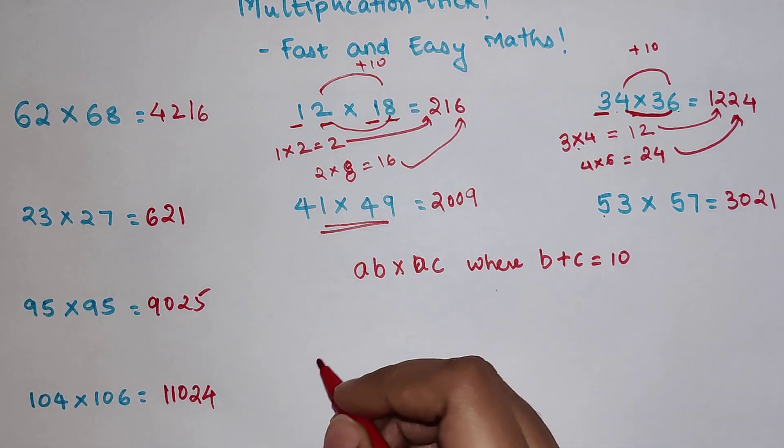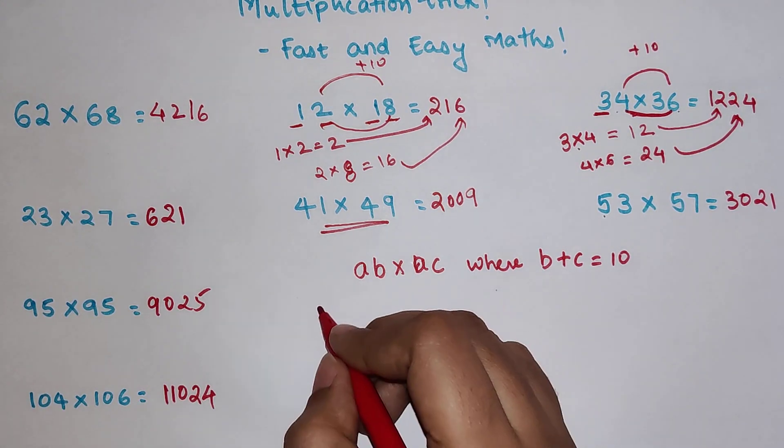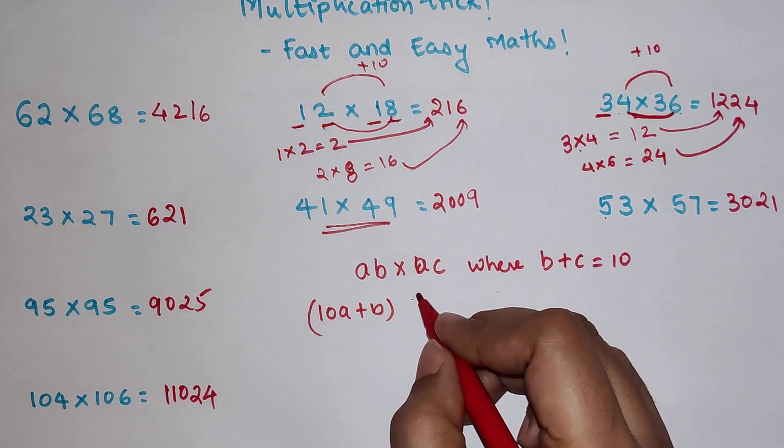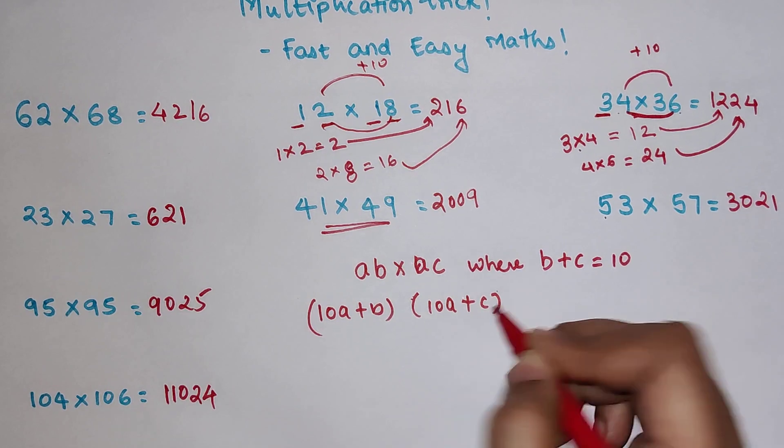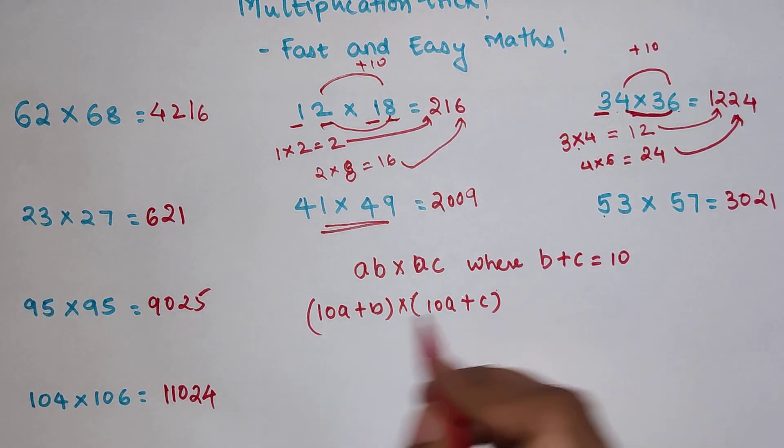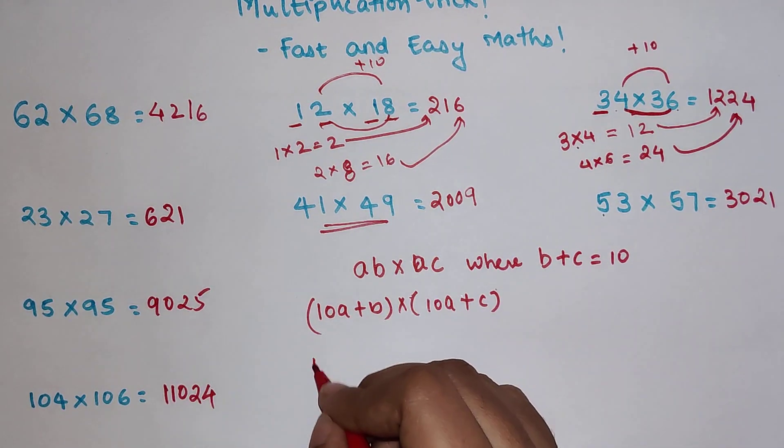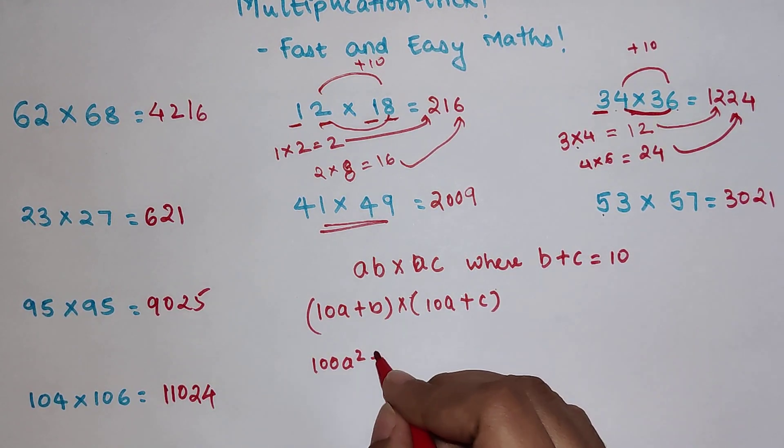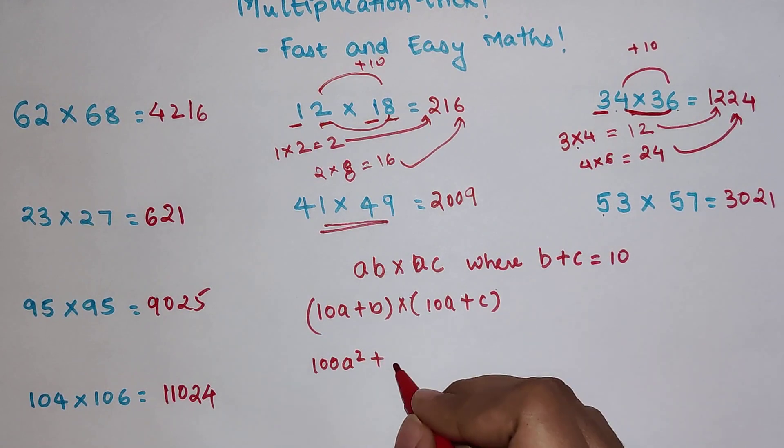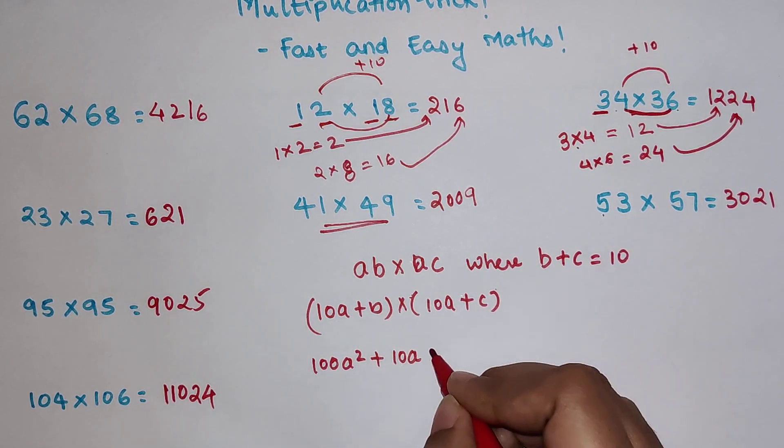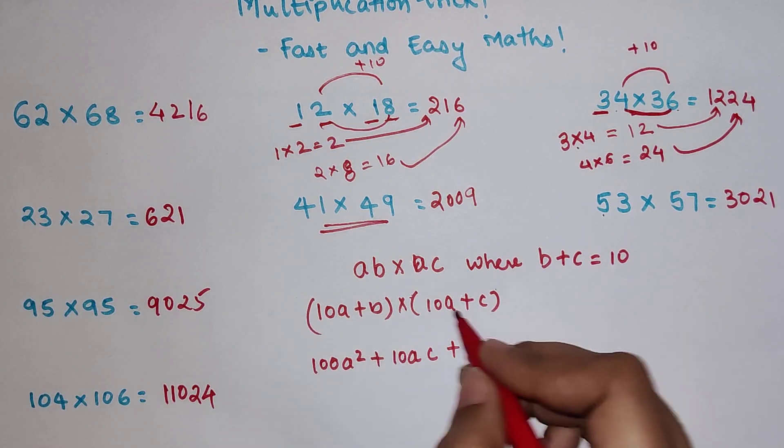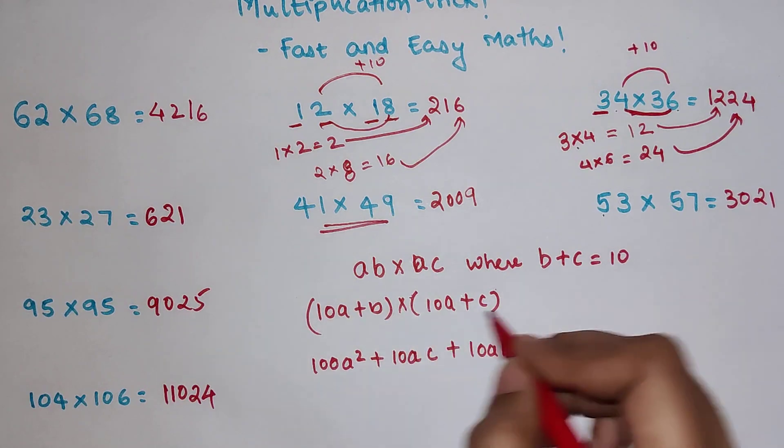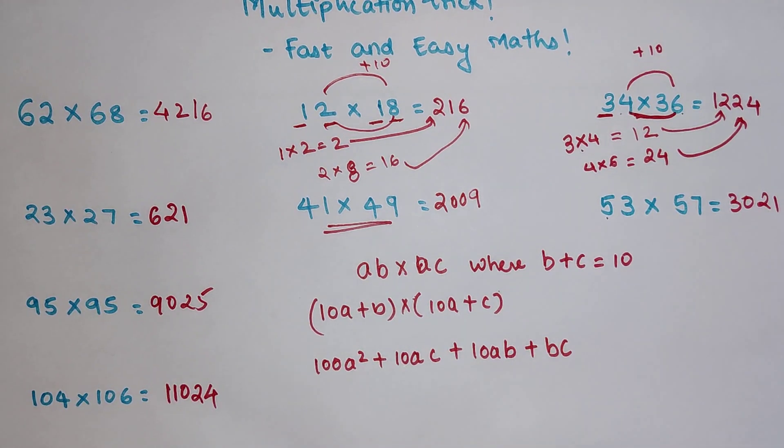So now what we will do, we will break this. So this is nothing but 10A plus B and this is 10A plus C. Now let's open the brackets. So we have 100A square plus 10 into A into C. So 10AC plus B into 10A. So it is going to be 10AB plus B into C. That is BC.